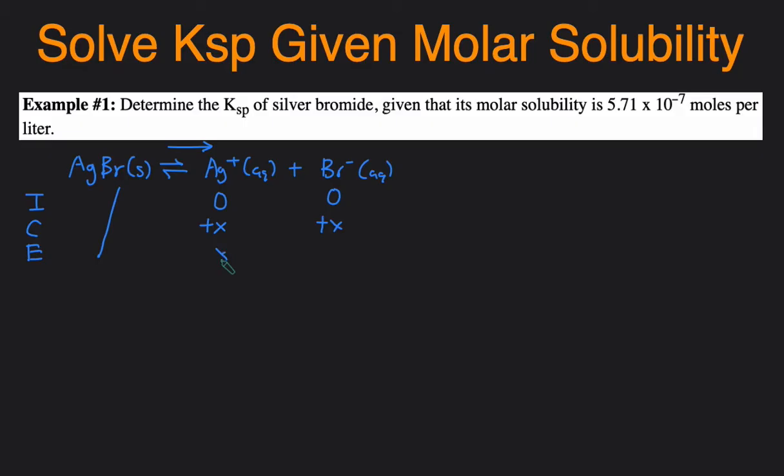Then we can set up the Ksp expression, which is just the products over the reactants: the concentration of Ag+ times the concentration of Br-, and then divide it by 1 because the reactant is a solid, and we do not include solids in equilibrium expressions. Then we can substitute the variables into the expression, so Ksp will just equal X squared.